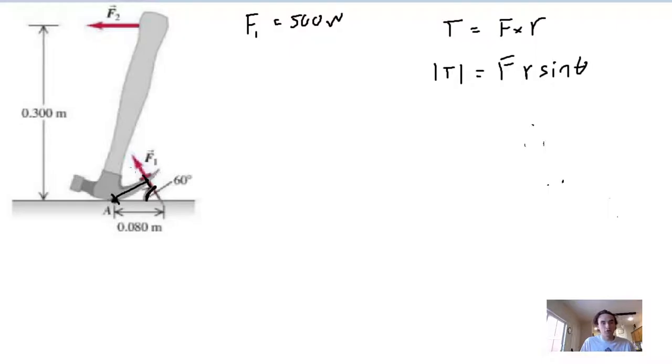The magnitude of torque will just be F1 times what this radius is. This right here is going to be a right angle, and we know what the hypotenuse is, it's 0.08. We know that this is 60 degrees, so we can say that r1 equals 0.080 meters times sine of 60, because it's an opposite side there.